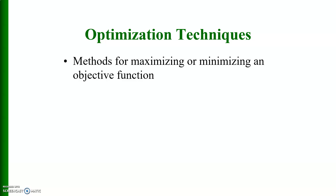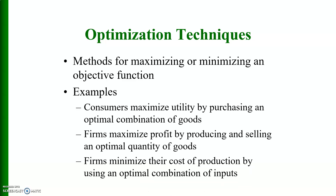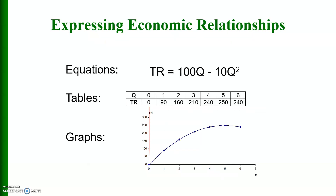Today we start with the first part of optimization techniques. Optimization techniques are concerned with the methods for maximizing or minimizing an objective function. Examples include: a consumer maximizing utility by purchasing an optimal combination of goods; a firm maximizing profit by producing and selling an optimal quantity of goods; and firms minimizing their cost of production by using an optimal combination of inputs.